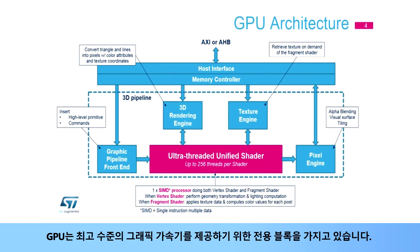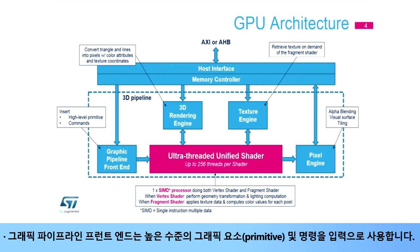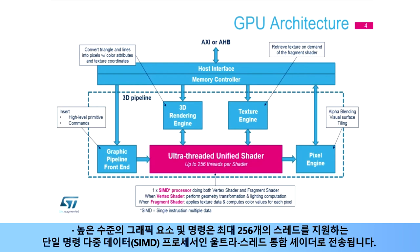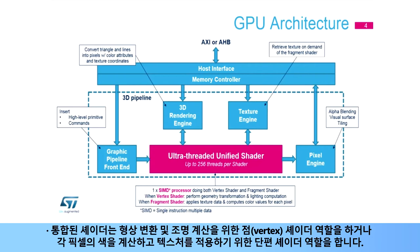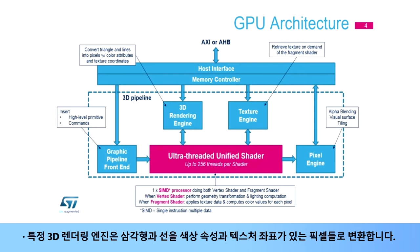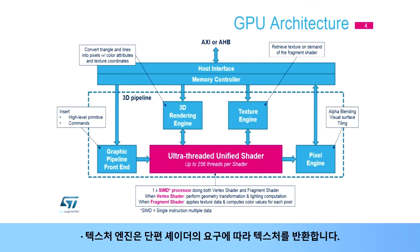The GPU has a dedicated block to provide best-in-class graphic acceleration. The graphic pipeline front end takes as an input the high-level graphic primitives and commands. They are transmitted to the ultra-threaded unified shader, which is a single-instruction multiple data or SIMD processor supporting up to 256 threads. The unified shader acts as a vertex shader for geometry transformation and lighting computation, or as a fragment shader to apply textures and compute the colors of each pixel. A specific 3D rendering engine converts triangles and lines into pixels with color attributes and texture coordinates. The texture engine ensures the retrieval of the textures on demand of the fragment shader.